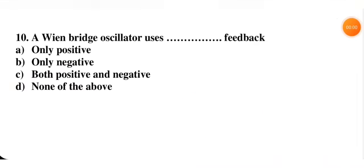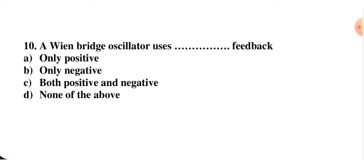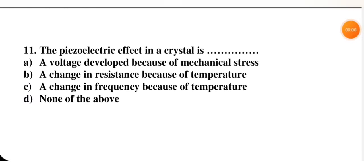Next question: a Wien bridge oscillator uses — only positive feedback, only negative feedback, both positive and negative, or none of the above? The Wien bridge oscillator uses both positive and negative feedback, so option C is the right option.